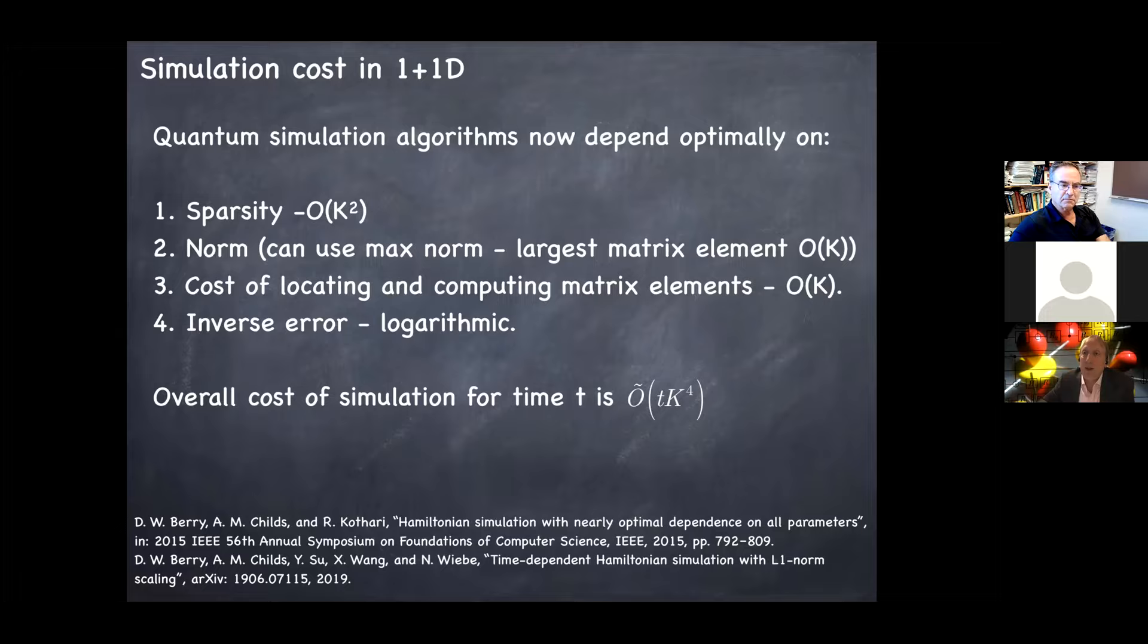And remember that the dimension of this thing is exponential in the square root of k. And so we can specify this Hamiltonian efficiently and we can use these marvelous new methods that have been developed by Andrew Childs and Dominic Berry and Robin Kothari and Nathan Wiebe and many other people which scale almost optimally, meaning optimally up to logarithmic factors in the input variables. So the things that a quantum simulation algorithm depends on are the norm of the Hamiltonian. We can just use the max norm, which is just the largest matrix element, which in this case scales again like k. They scale with the cost of finding and calculating the non-zero matrix elements. Again, in this case, that costs us a cost growing linearly with k.